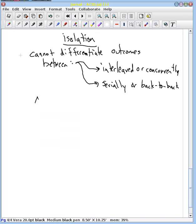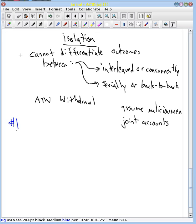Let's do an ATM withdrawal. And what we're going to do is we're going to assume maliciousness here and we're going to have a joint account. So what we're going to do is at ATM number one we're going to have one account holder operate and at ATM number two we're going to have a second account member operate.